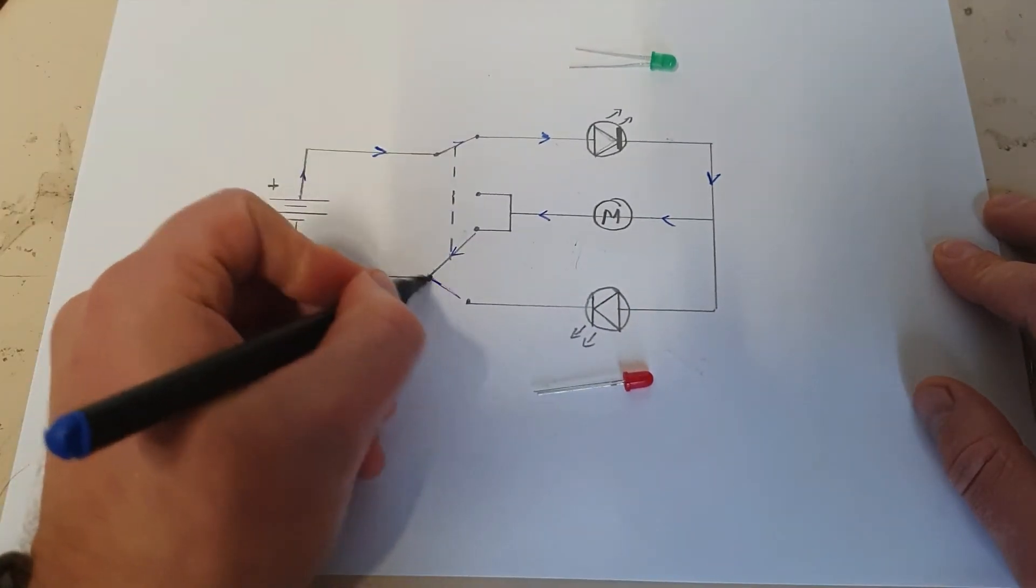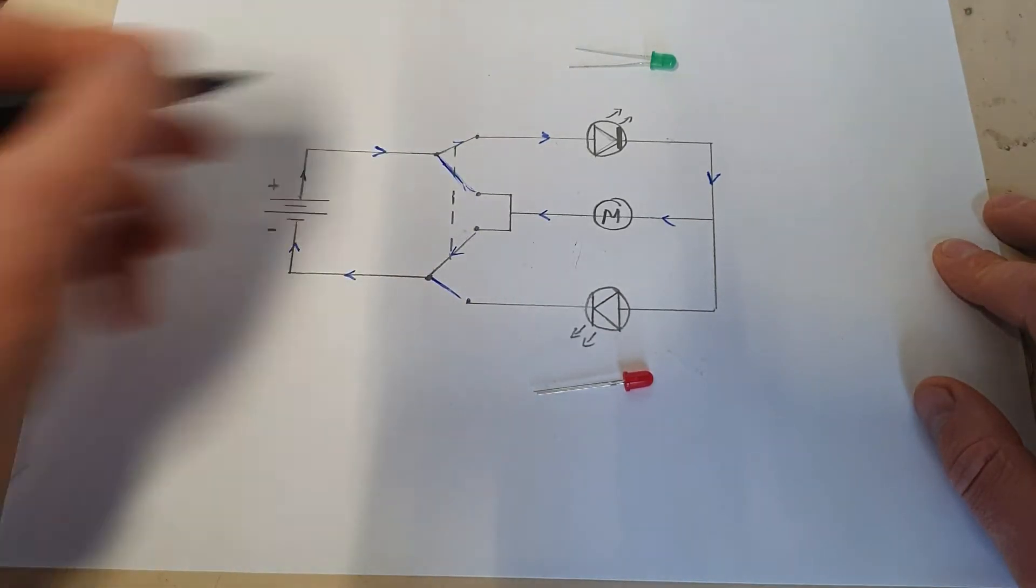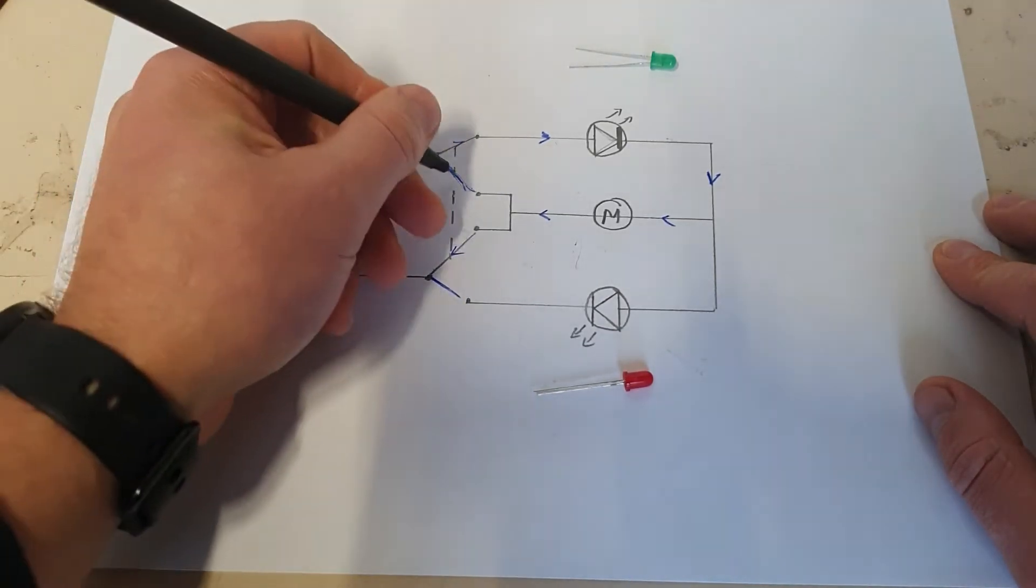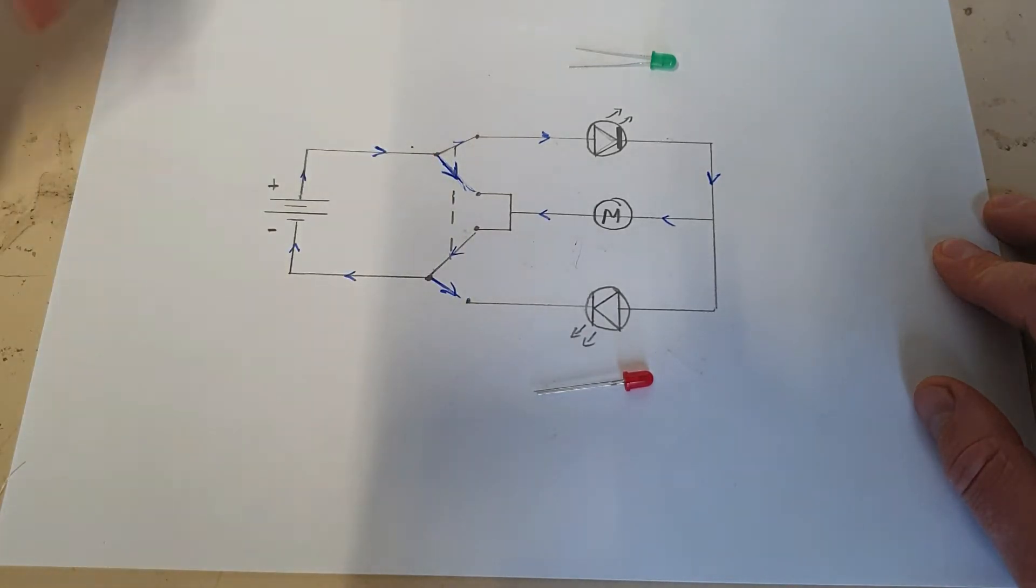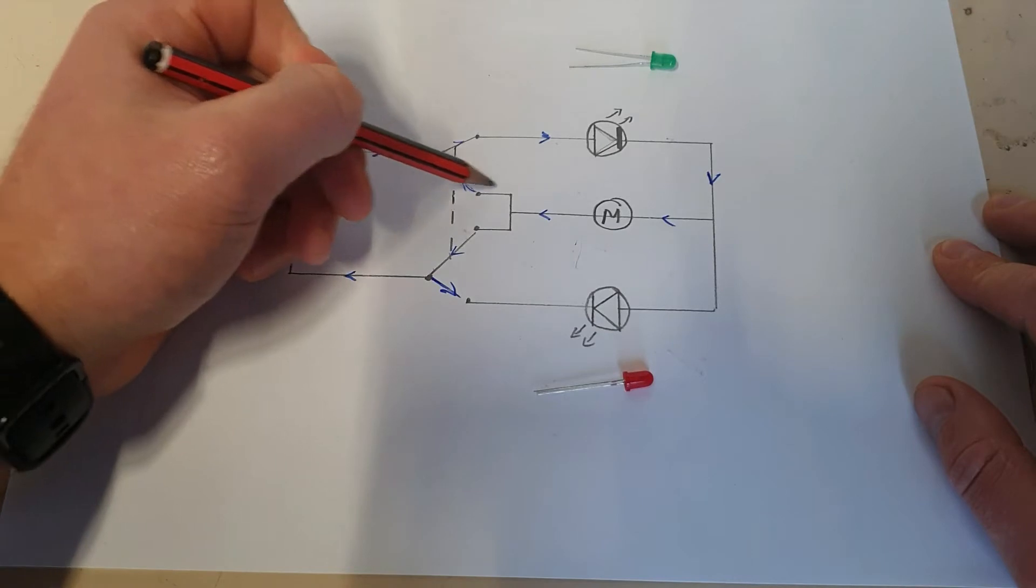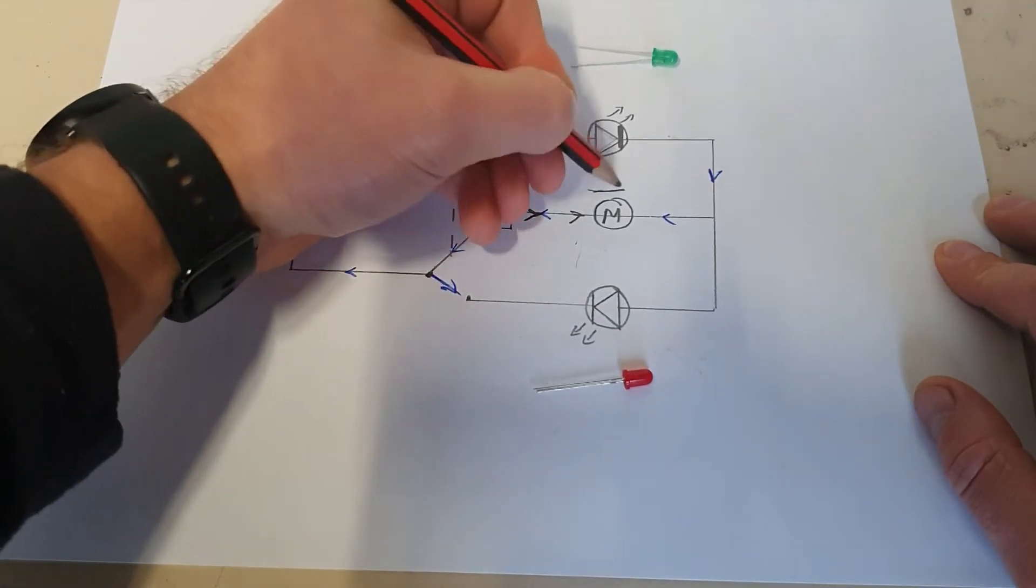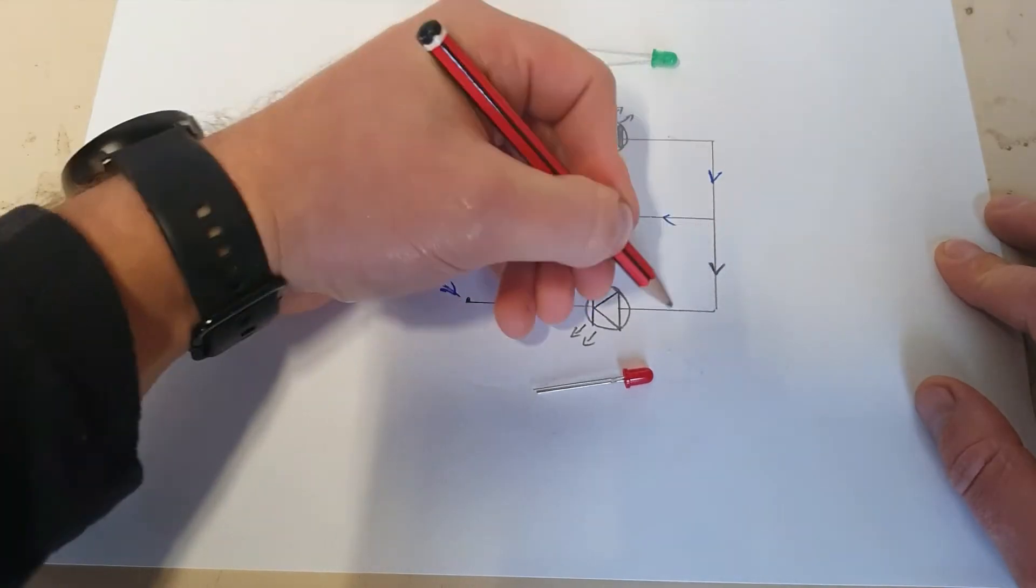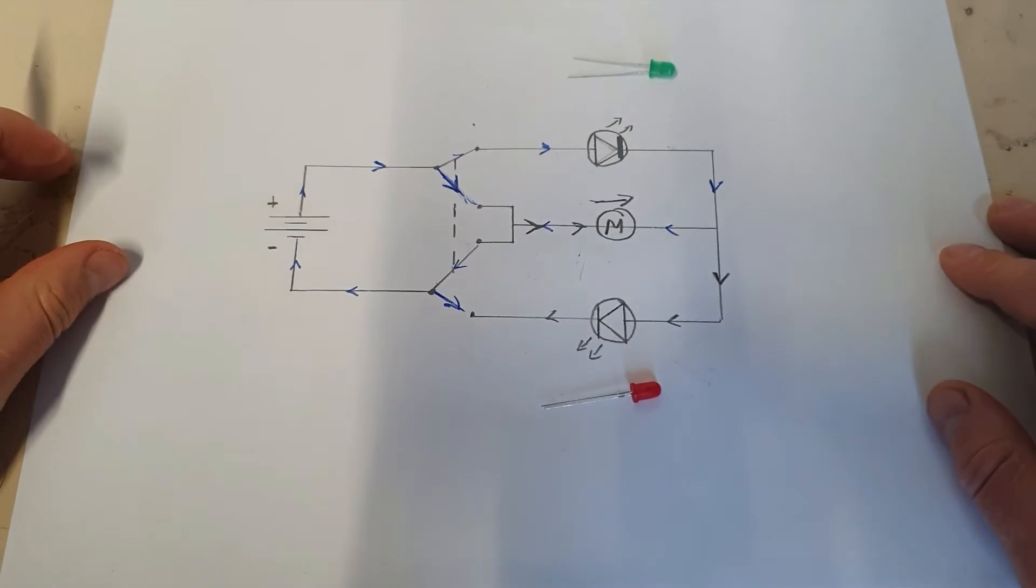However, if we switch our pole, if we put the motor in the opposite direction, that's what our double pole double throw center off switch is for. Now our current is going to go this direction. It's going to go this way through the motor, this way for the red LED, and now it's going to come around here and go through the red LED in one direction.